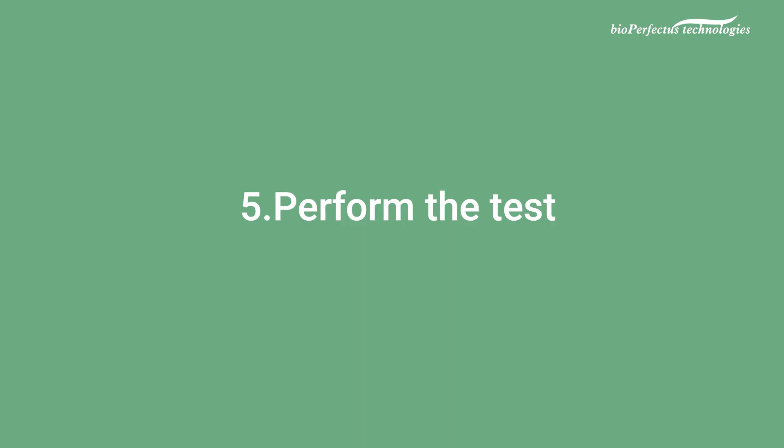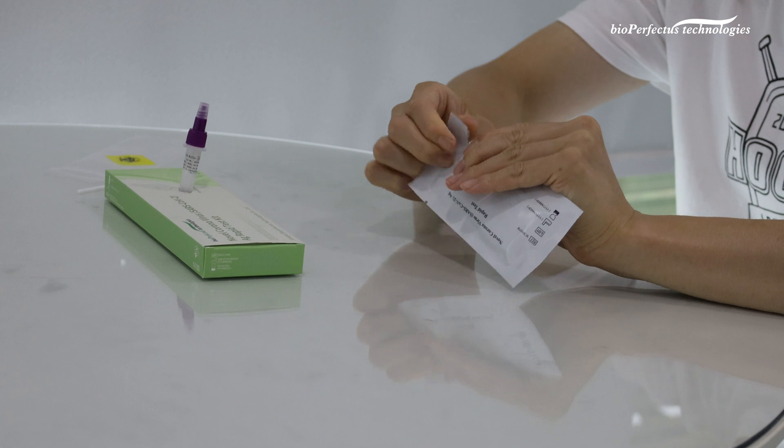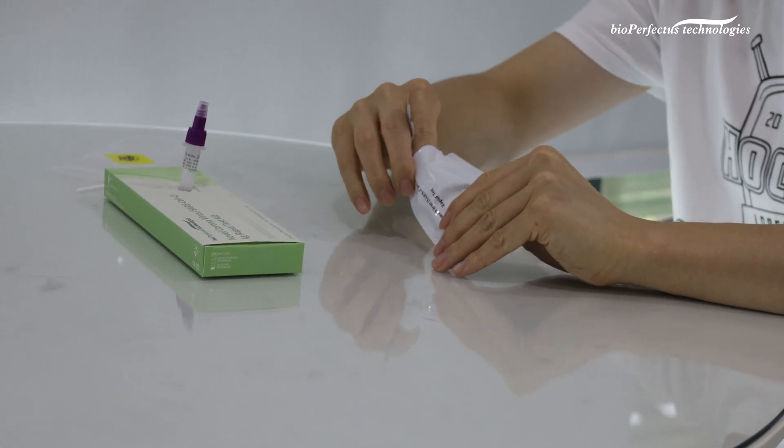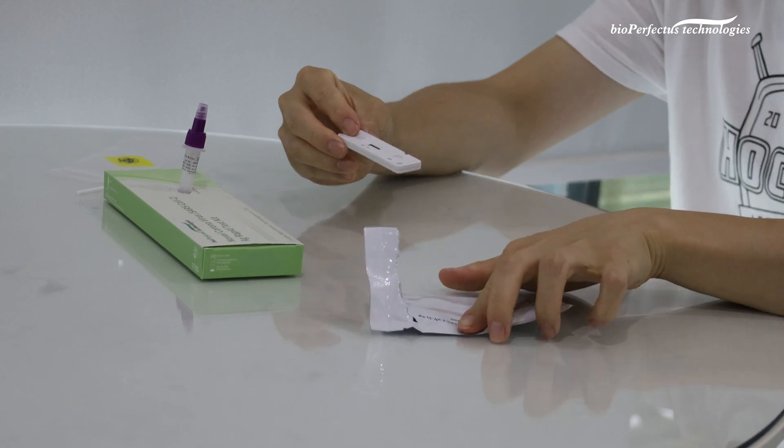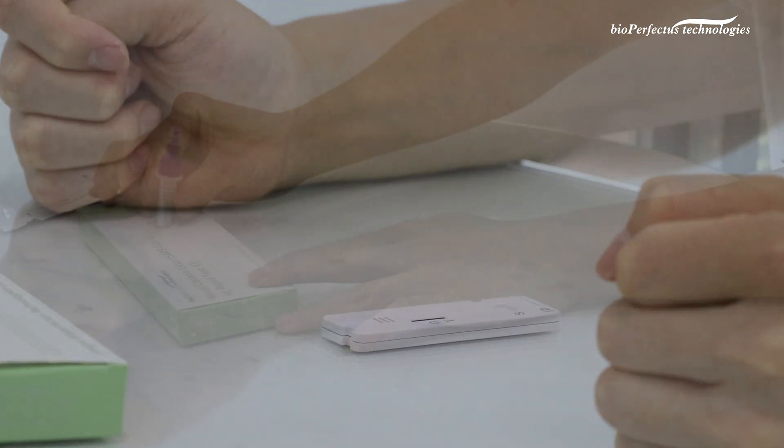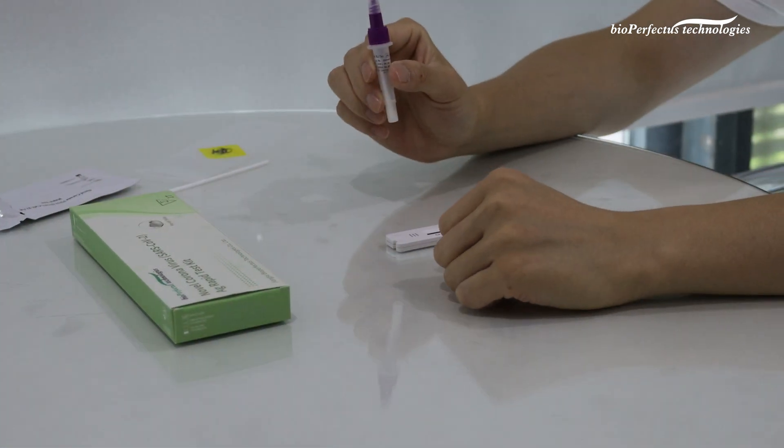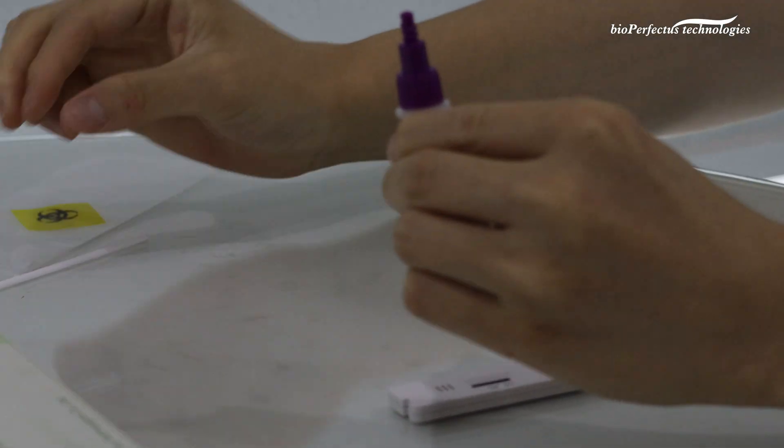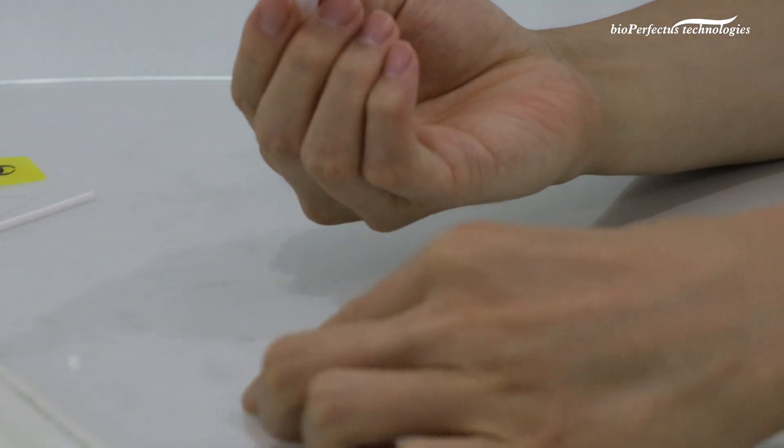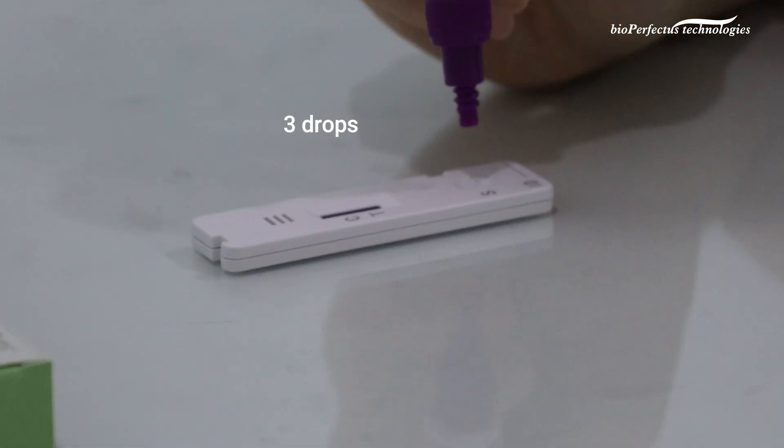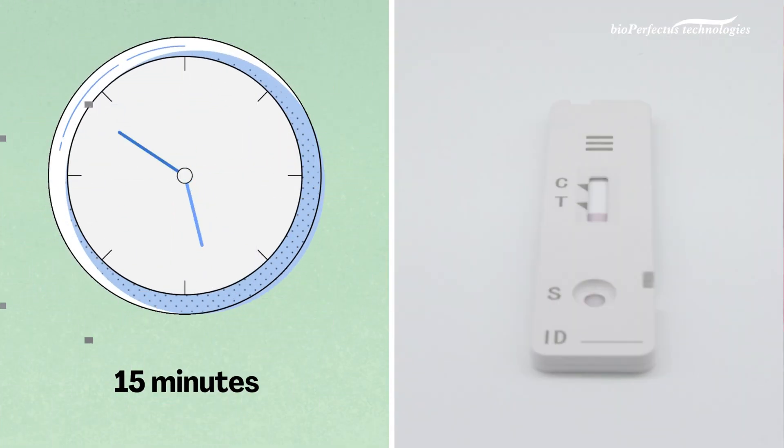Step 5: Perform the test. Remove the cassette from the foil pouch. Place it horizontally on the table. Unscrew the white lid on the top of the pre-packed extraction tube. Gently squeeze the tube to dispense 3 drops of the liquid onto the sample well of the cassette. Set the time for 15 minutes after the liquid is added.